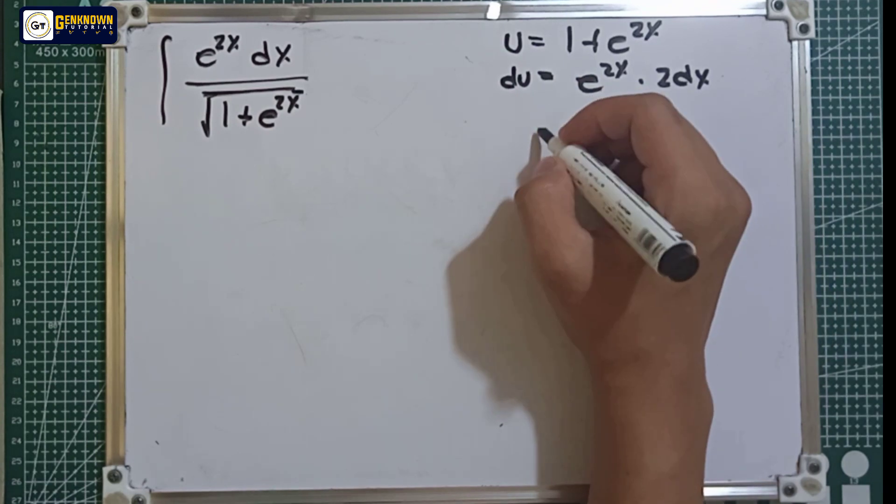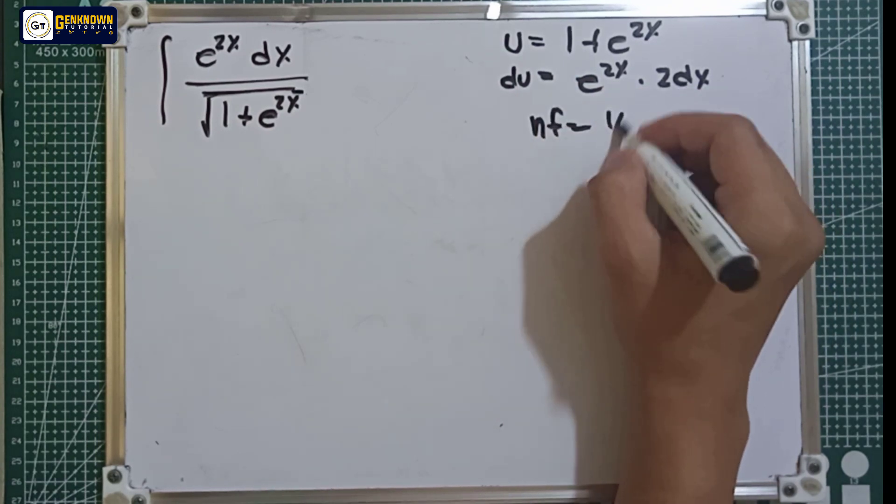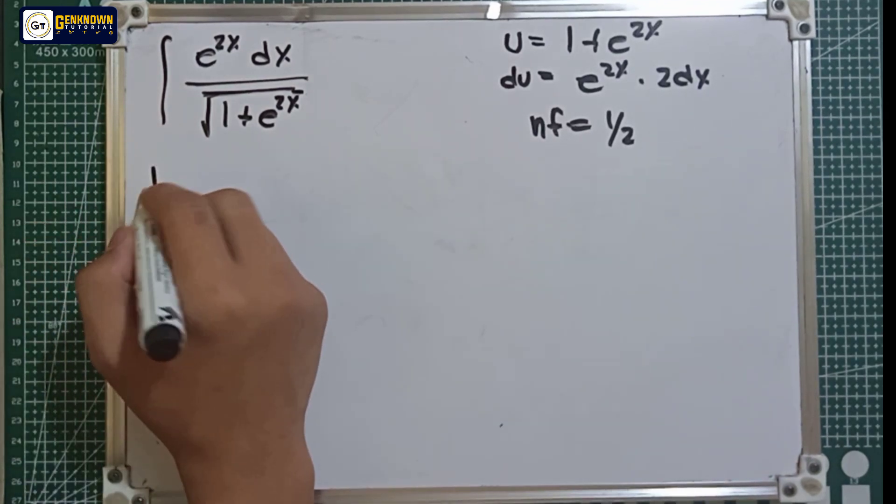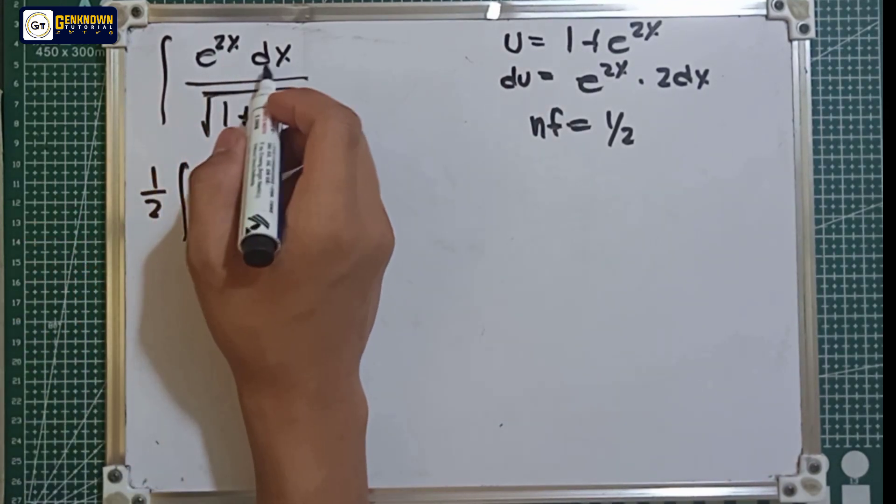So kitang kita na ang neutralizing factor ay equal to 1 over 2. So direct sub, we have 1 over 2 integral of e raised to 2x dx.